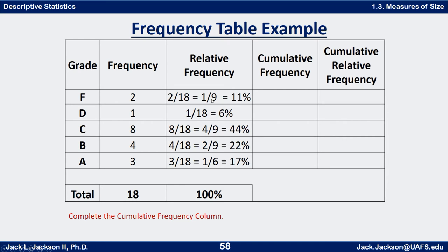Two over 18 reduces to one ninth. Eight eighteenths reduces to four ninths. Four eighteenths similarly is two ninths. Three eighteenths reduces to one sixth. If we divide these out and round off: one ninth is approximately eleven percent, one eighteenth is six percent. These are rounded to the nearest whole number percent: forty-four percent, twenty-two percent, and seventeen percent. Of course any time you add up the relative frequencies you always get one, or one hundred percent.